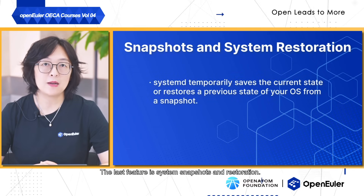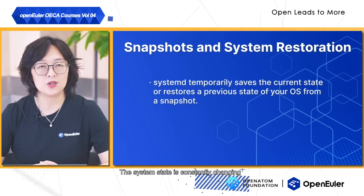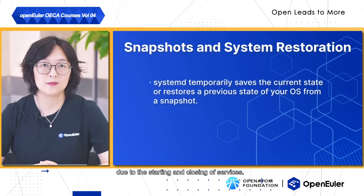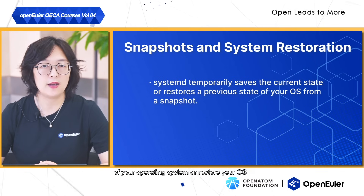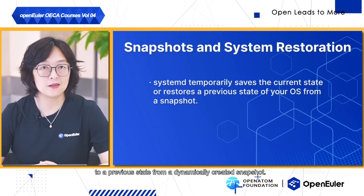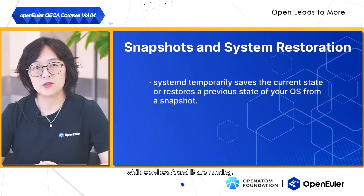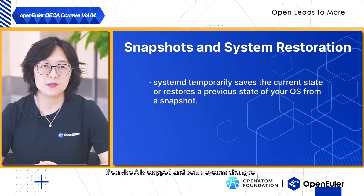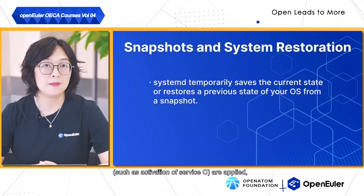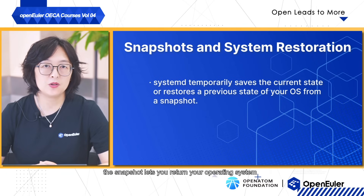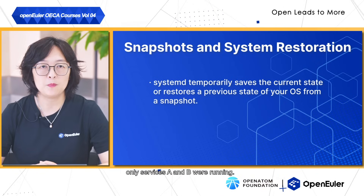The last feature is system snapshots and restoration. The system state is constantly changing due to services starting and stopping. System-D can temporarily save the current state of your operating system, or restore it to a previous state from a dynamically created snapshot. For example, if a snapshot was created while services A and B were running, you can restore the OS to that earlier state.